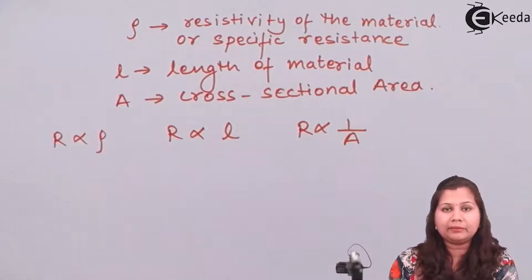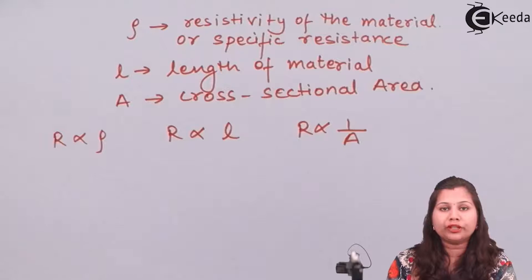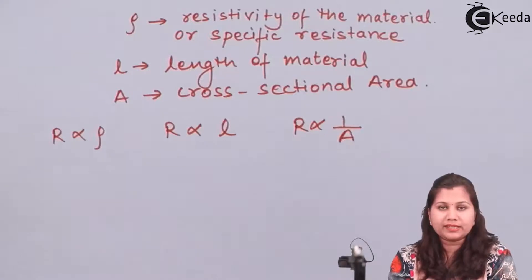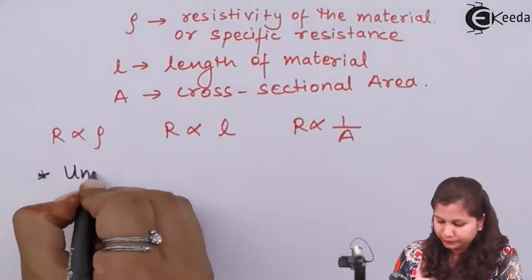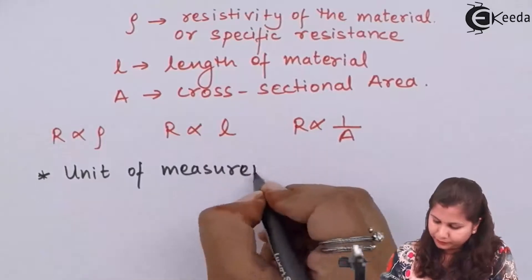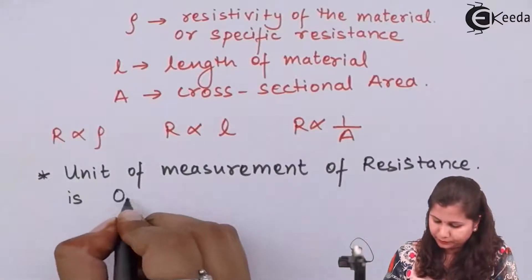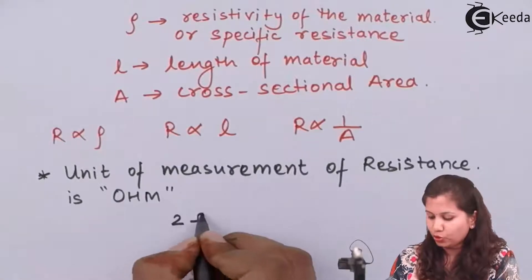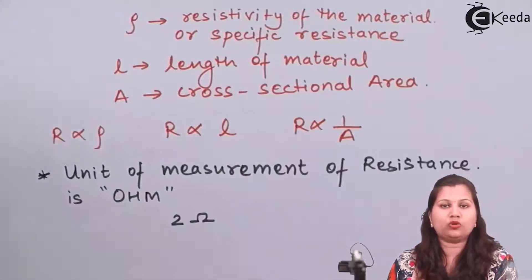These are the formulas through which we can calculate resistance. The unit of measurement of resistance is ohms. If the numerical value of a resistance is 2, we express it as 2 ohms — this is the symbol for ohm. This value can be in ohms, kilohms, or megaohms.